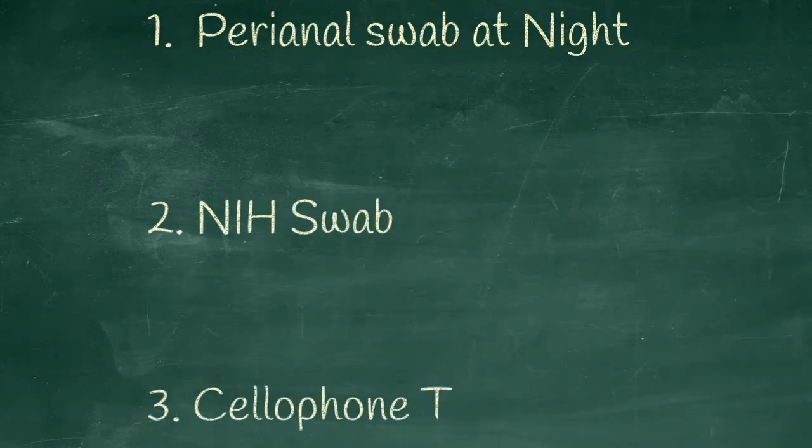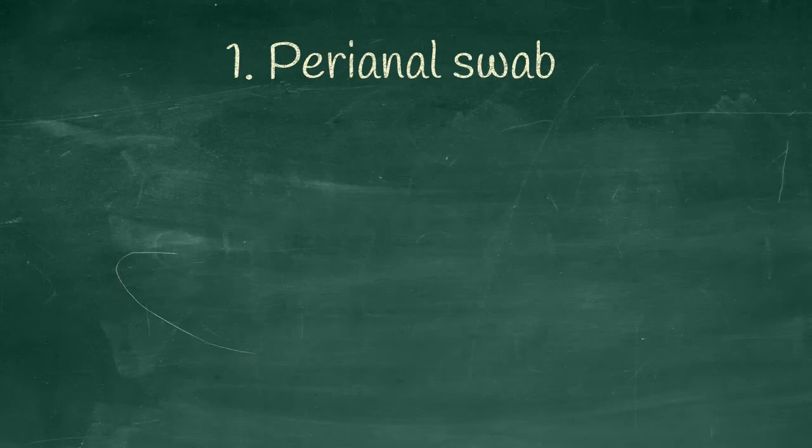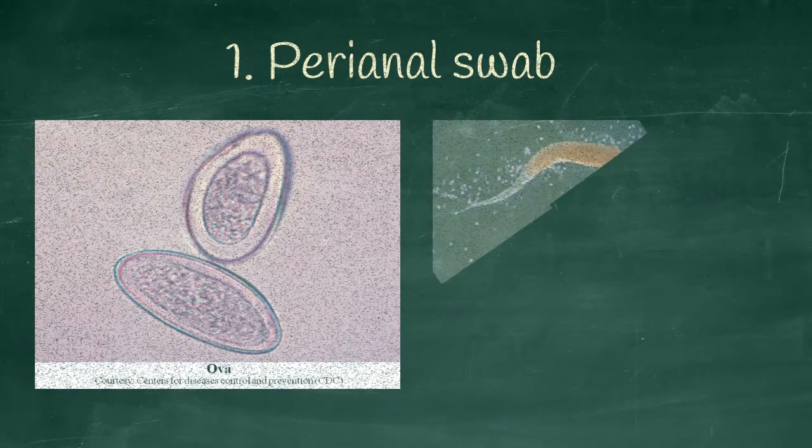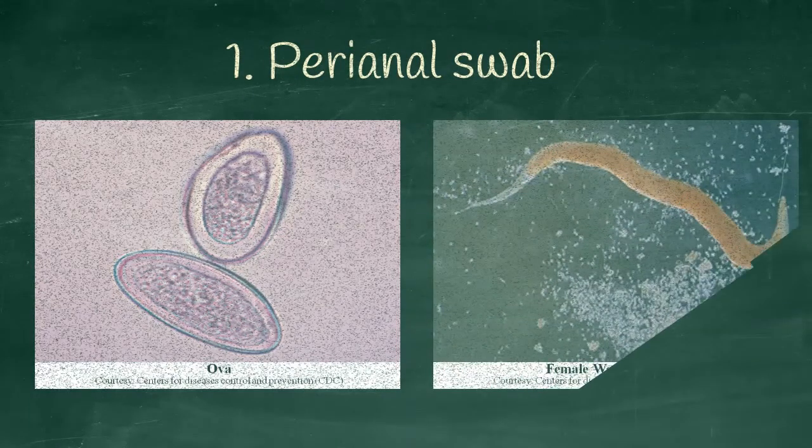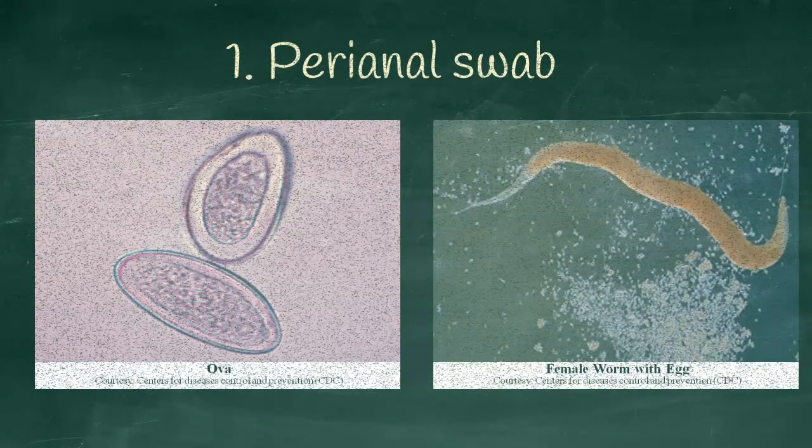Diagnosis. Perianal swab at night, anal swab, cellophane tape method. Perianal swab helps to identify the ova of enterobius vermicularis. In this picture you can see the ova of enterobius vermicularis and also see the female worm which liberates the egg.